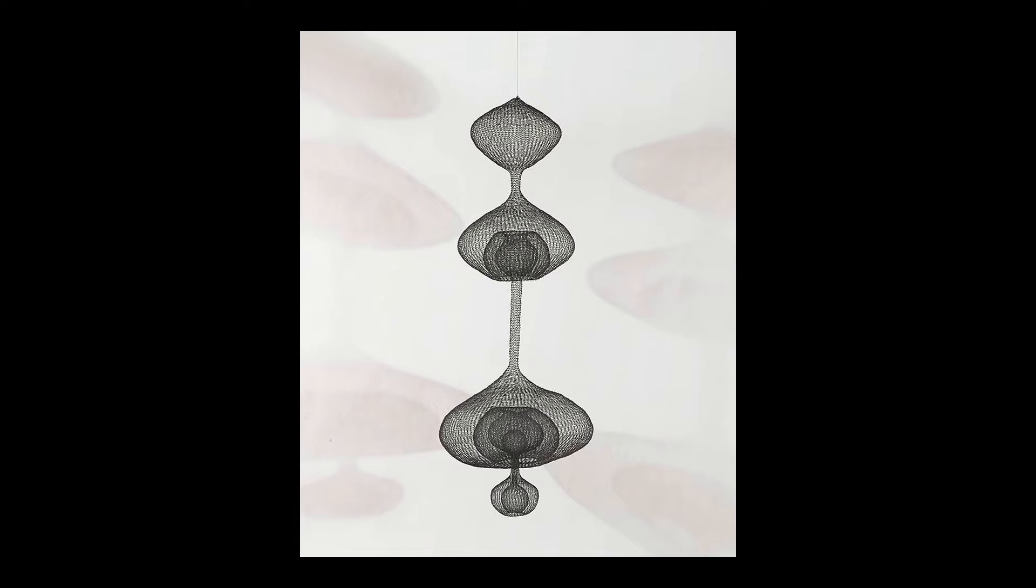The sculpture looks like it has been crocheted, doesn't it? Asawa actually used a crochet hook when she needed to make a repair to her sculptures. Otherwise, all the weaving was done completely by hand, with no tools.